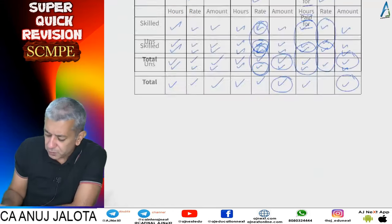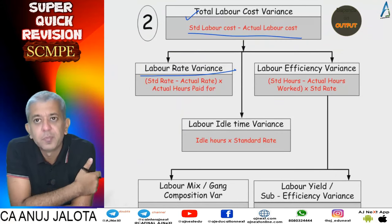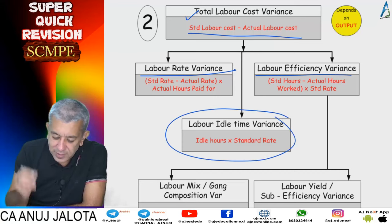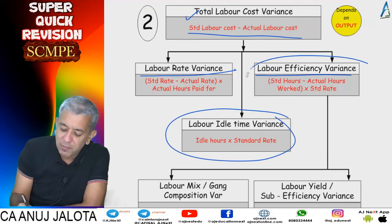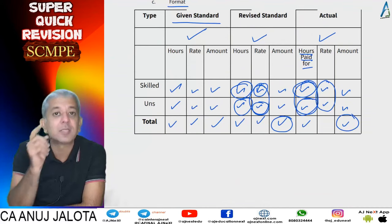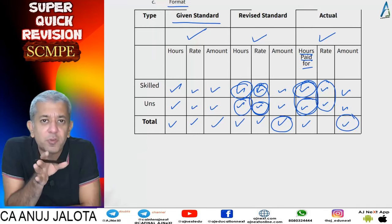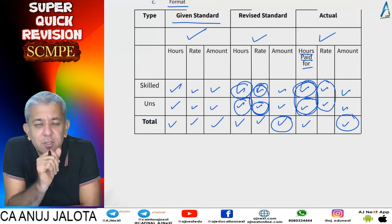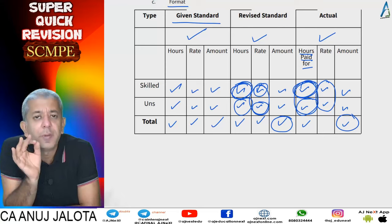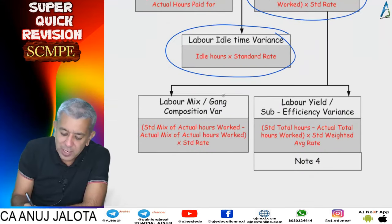So your first variance is total labor cost variance, second is labor rate variance — standard rate minus actual rate into actual hours paid for, third is labor idle time variance — idle hours into standard rate. The fourth important one is labor efficiency variance: standard hours for each type of labor minus actual hours worked — not actual hours paid for. Idle hours are not the workers' fault, so remove them when computing efficiency. Multiply by standard rates.